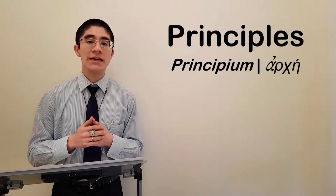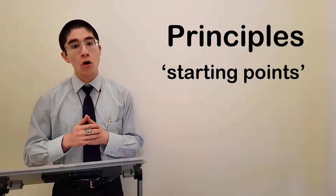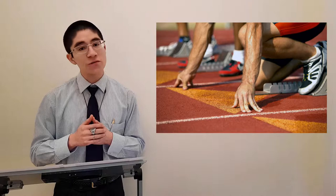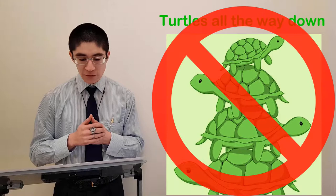Principles, principium in Latin, arche in Greek, are general starting points, or points of origin, from which rules and norms derive. Strictly speaking, principles cannot be justified, otherwise they will not be starting points. Nor can an infinite regression of justification exist.